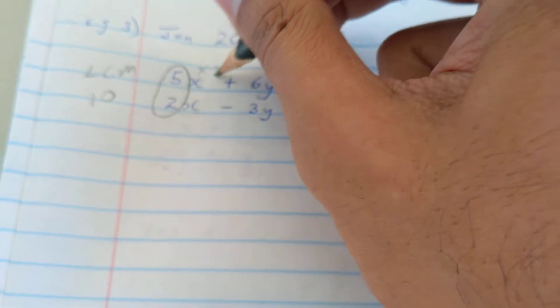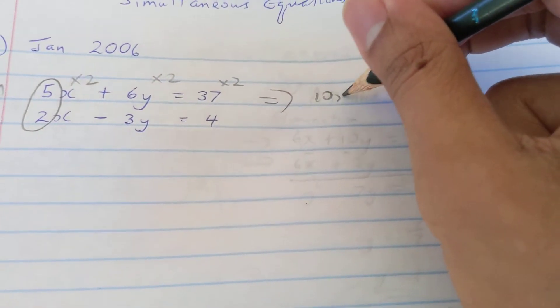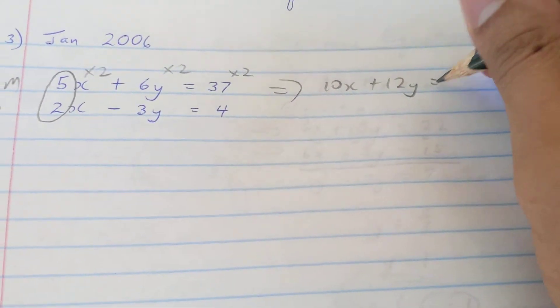The goal is to make both of them the same. The LCM of both of them is 10. To make this 10 I'm going to multiply by 2, but everybody in the row is going to get multiplied by 2. So I'm going to get a new equation: 10x, which is what I want, 6 by 2 is going to give me 12y, and 37 by 2 is going to give me 74.